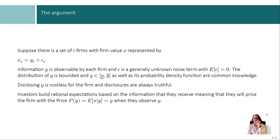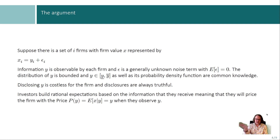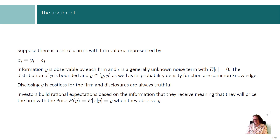The signal y is what firms can communicate. Y is distributed in a bounded distribution with a lowest y and a highest y, and this is common knowledge — also the density function of this distribution is common knowledge. So it is a known distribution; everybody knows this distribution, including market participants. However, market participants do not know each y sub i of a given firm. They know the overall distribution but not the individual y values for firms.